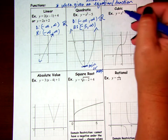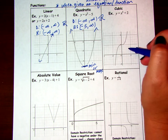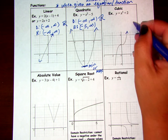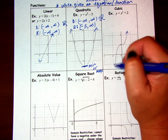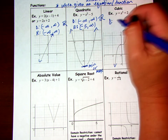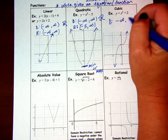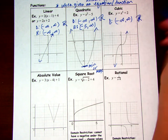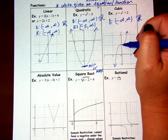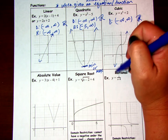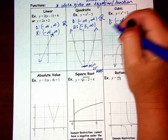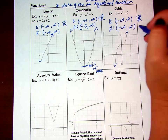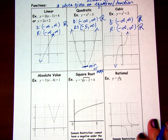For a cubic function, which you'll study in depth in Math 3, the domain goes from negative infinity to infinity — it always goes right and left forever. The range also goes down forever and up forever, so the range is all real numbers as well.